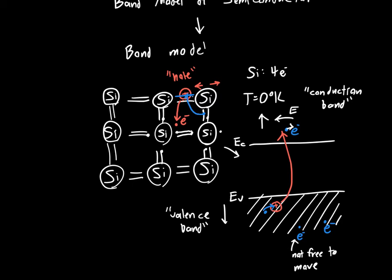Let me just redraw that. So this electron will cause this bond to reform, and this bond will be broken. And then the hole will essentially have moved to its next-door neighbor's apartment. So the electrons can fill holes.